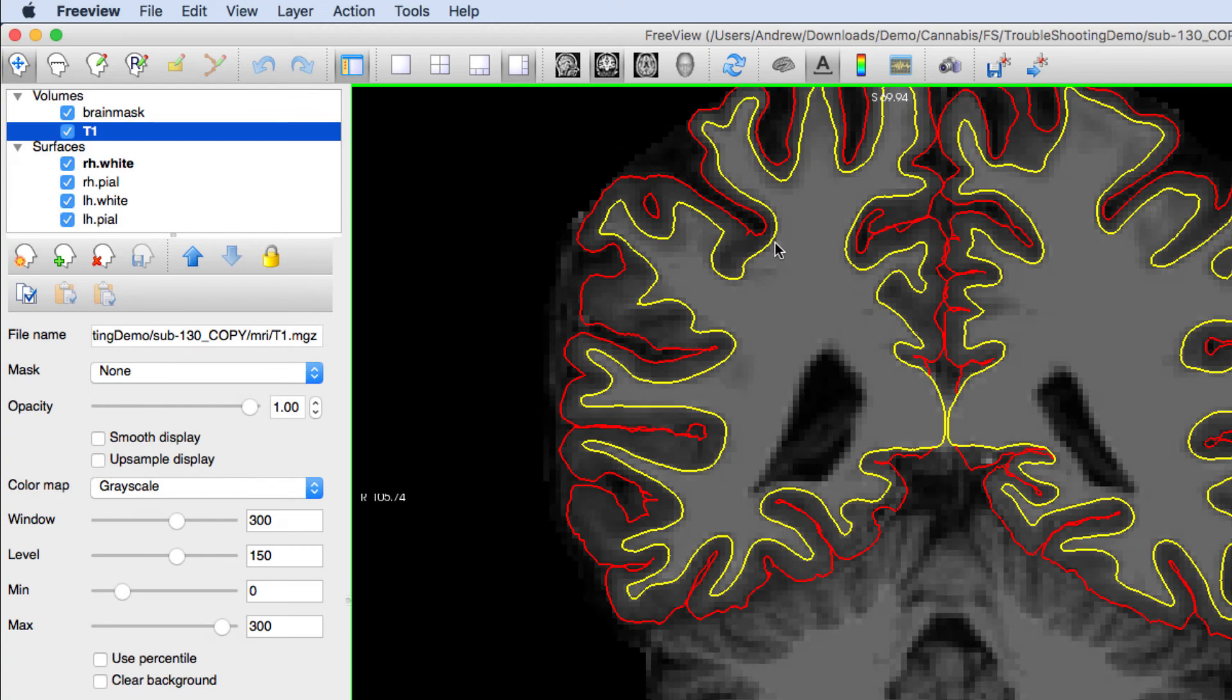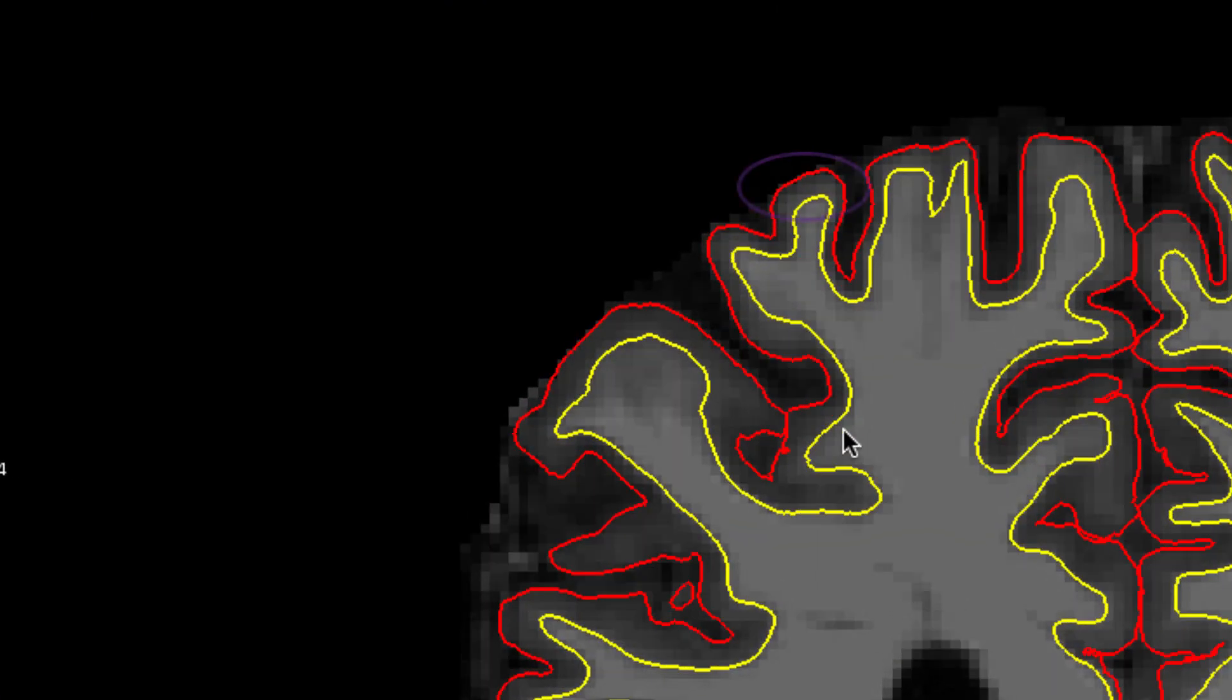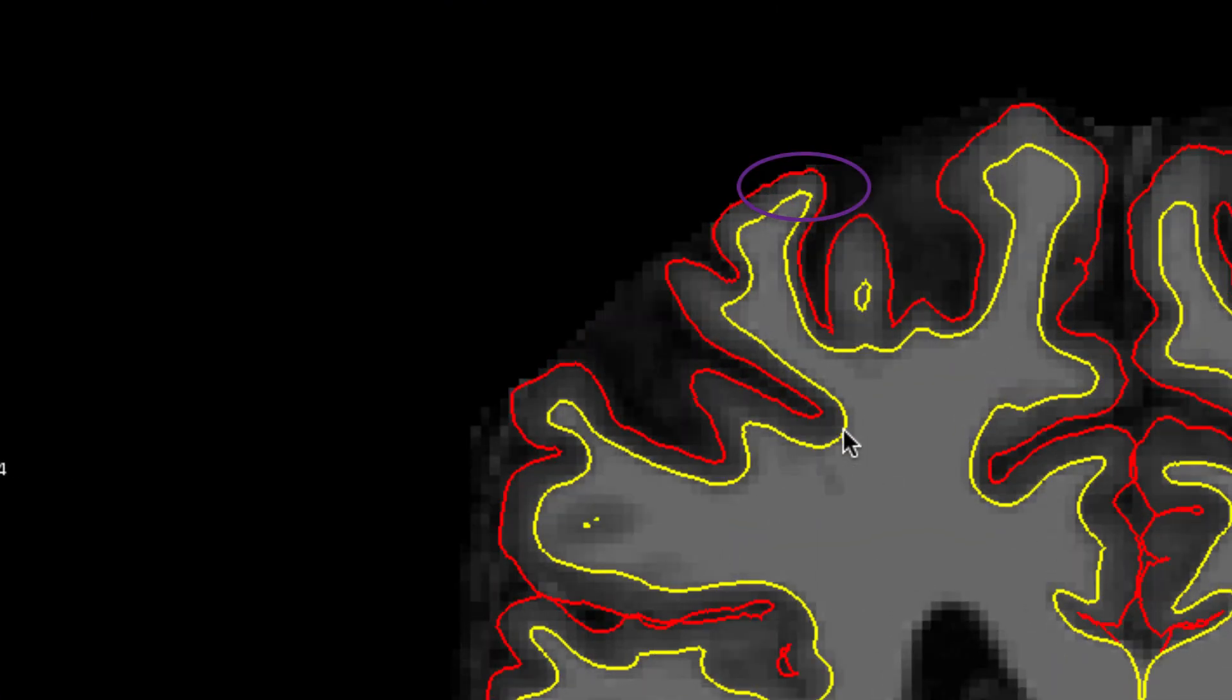Once this finishes, check the peel surfaces before and after to make sure it did a good job. In the next video, we'll cover another common editing procedure, adding control points to fix intensity normalization errors.